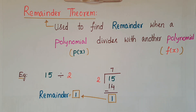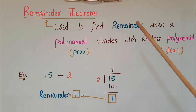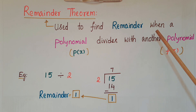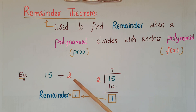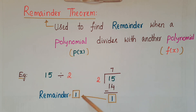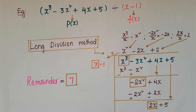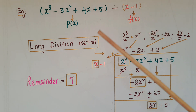Hello everyone, today I am going to tell you about the Remainder Theorem. It is used to find the remainder when a polynomial divides with another polynomial. Generally we get a remainder if we divide a number with another number, like 15 divided by 2 gives remainder 1. But if we divide a polynomial with another polynomial, then we use the long division method.